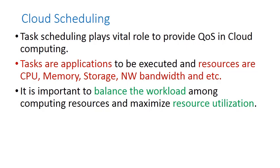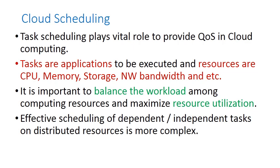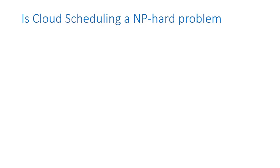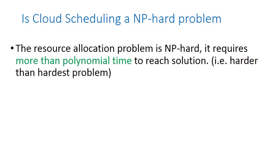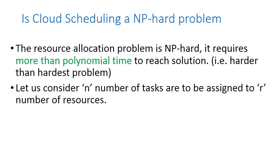The effective scheduling of dependent and independent tasks on distributed resources is more complex. The resource allocation problem is NP-hard — it requires more than polynomial time to reach the solution. That is, to provide a solution in cloud scheduling is harder than the hardest problem.